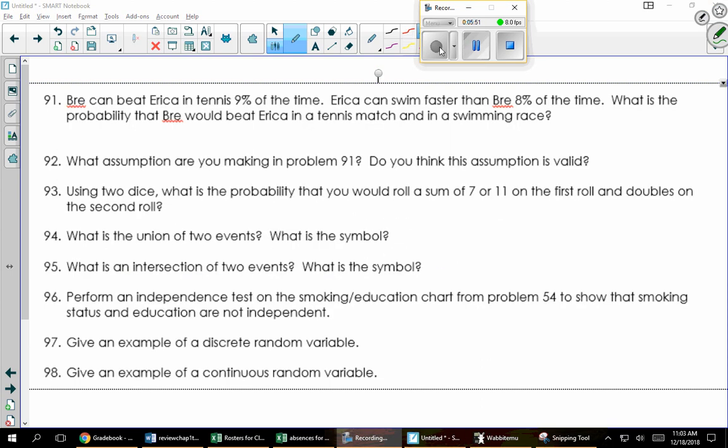All right, the next one says, Brie beats Erica 9% of the time in tennis. But Erica is faster 8% of the time in swimming. What's the probability Brie wins both matches? So assuming the matches are independent, there's a 9% chance that Brie wins this. And there's a 92% chance that Brie wins the swimming match. And so multiplying those two things together, I get 0.0828.